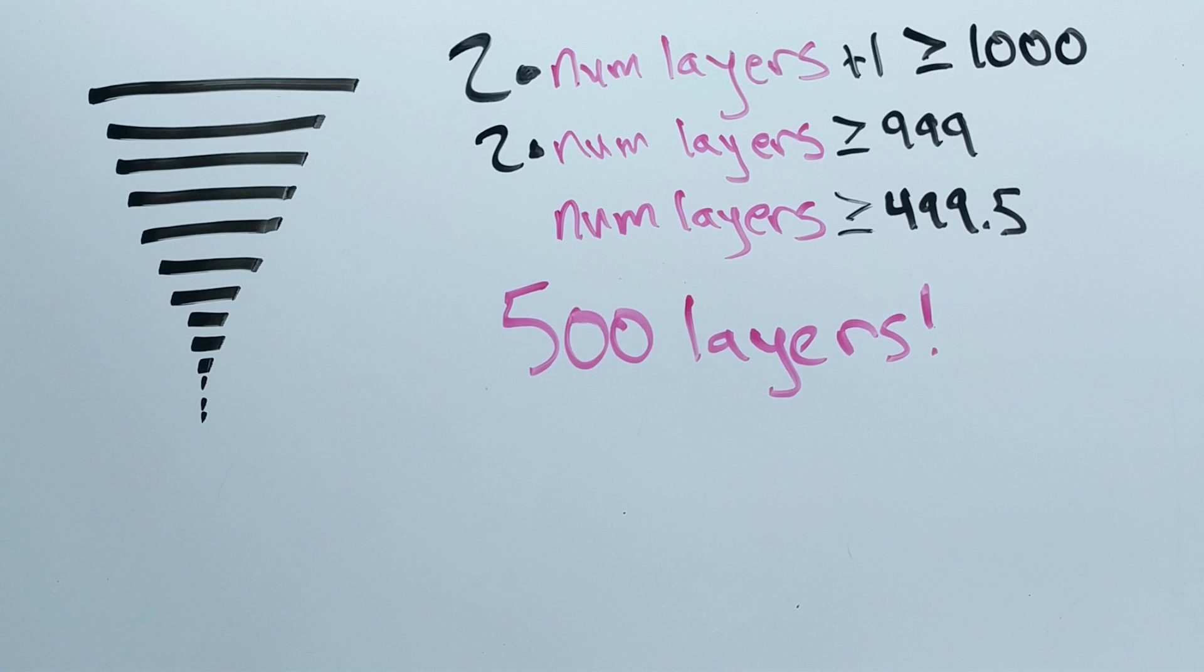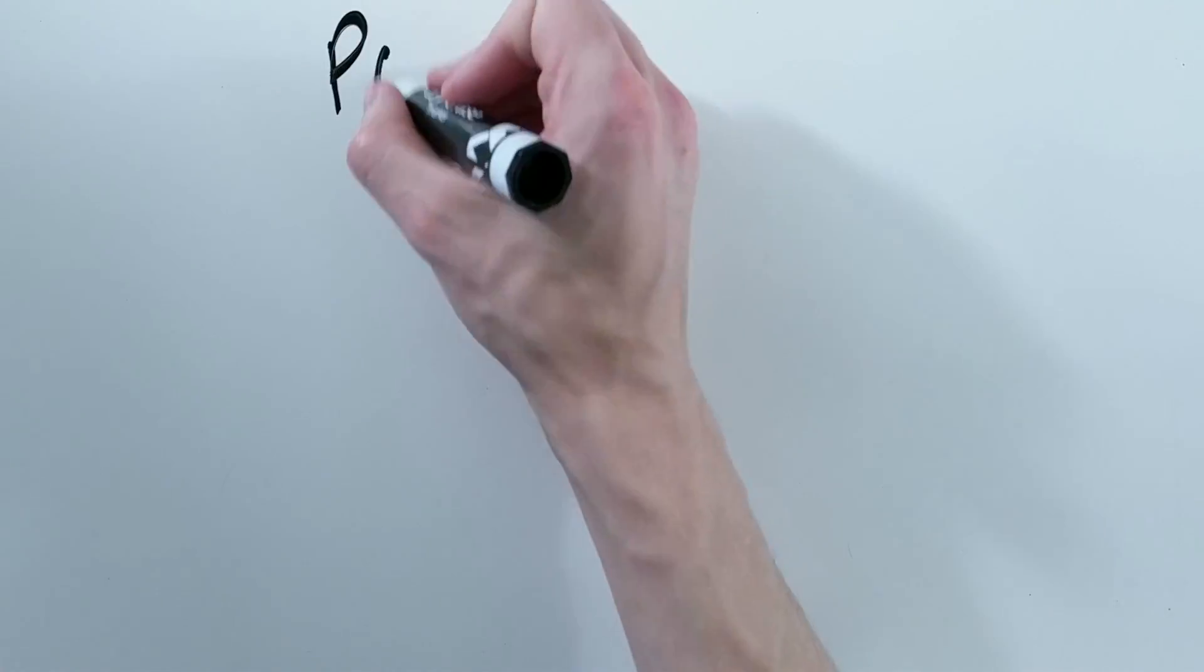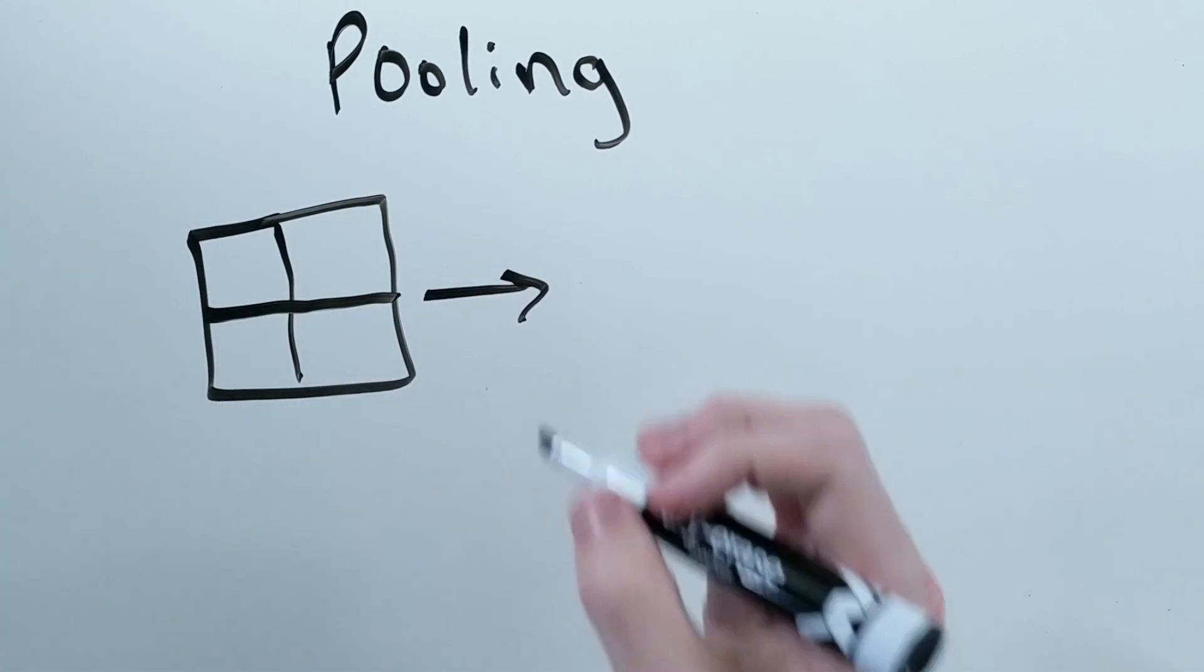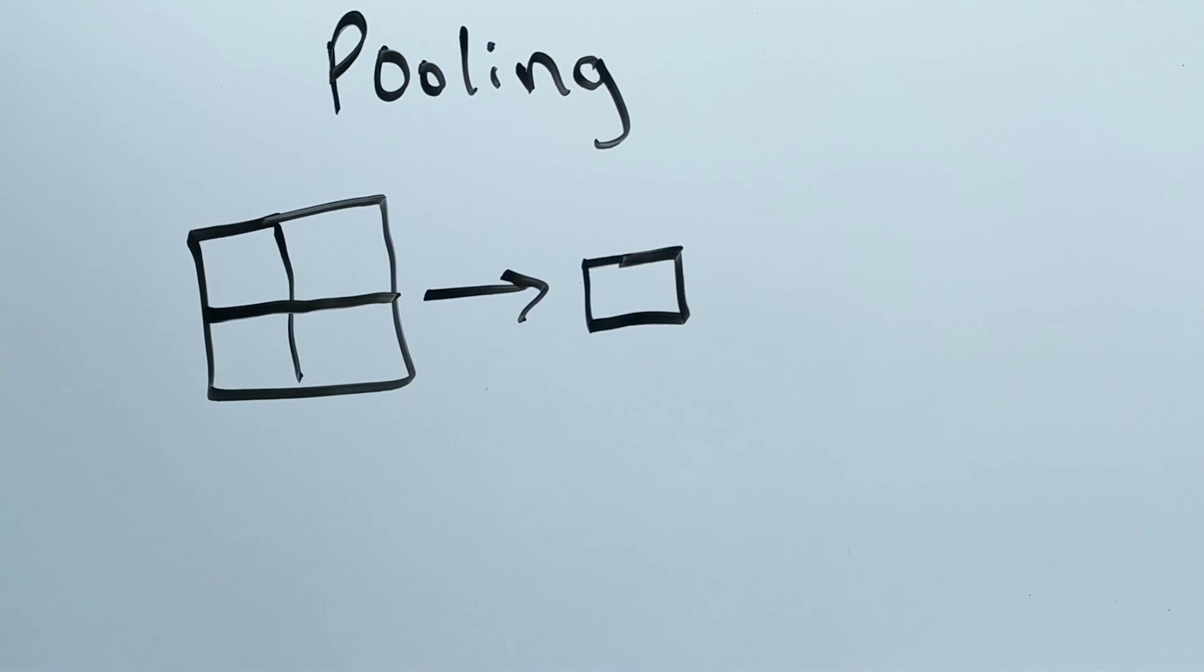But wait, there are plenty of convolutional neural networks that work great without using 500 layers. How do they work? They depend on pooling and other architecture changes to increase the size of the receptive field, but more on that in future videos.